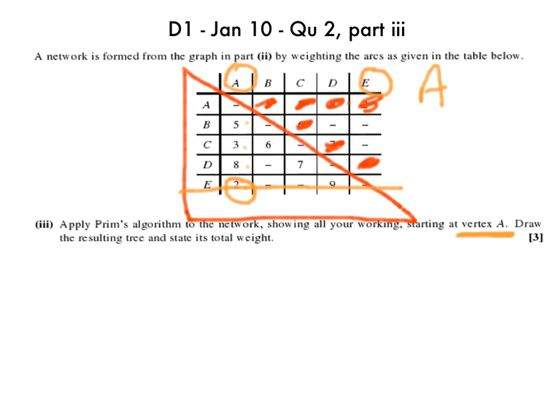So at this stage I know that A to E has a weight of 2, and then where do we go? So we scan again.